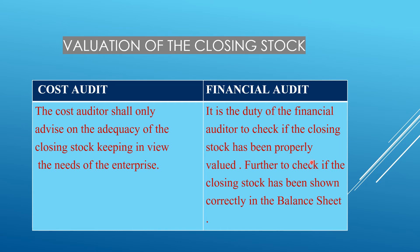Some people, just to show less profit in their books of account, do not value the closing stock properly and show it at a very little value. The financial auditor ensures that the closing stock has been shown at its proper value. The cost auditor advises on whether adequate closing stock is being maintained to maximize future profits.